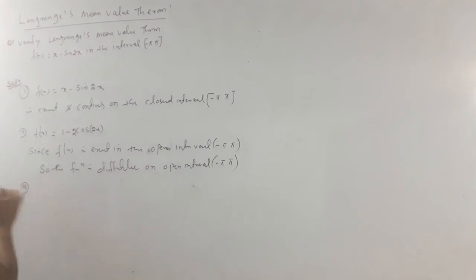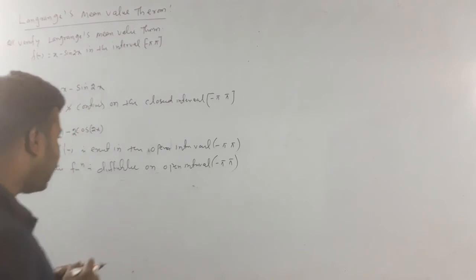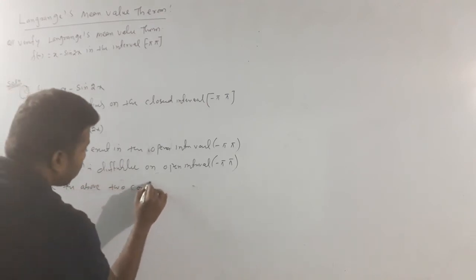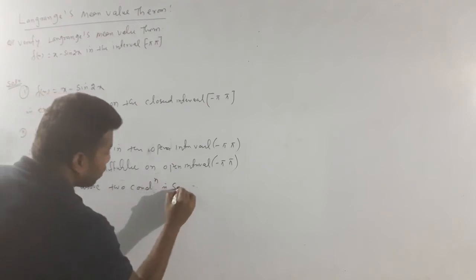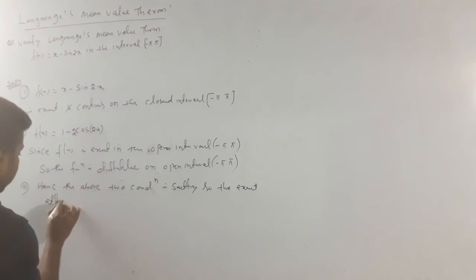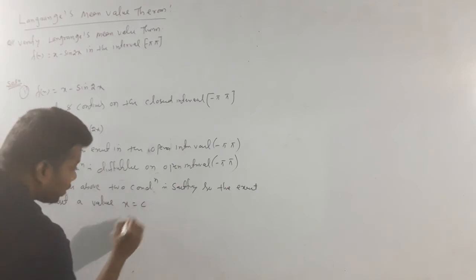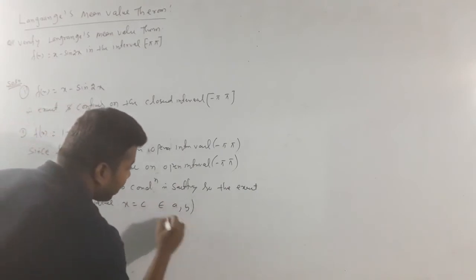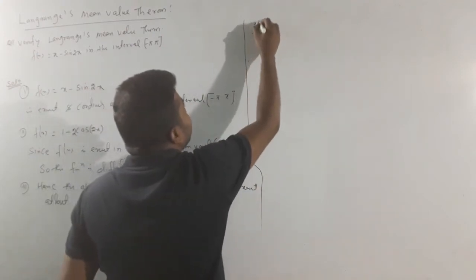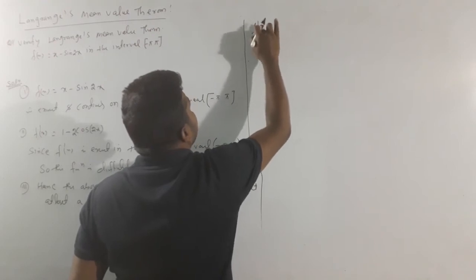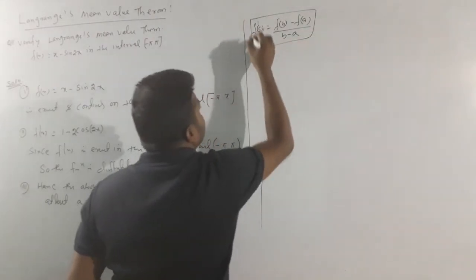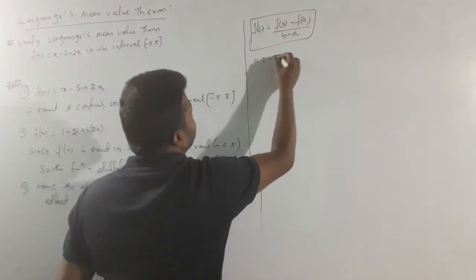Since both step 1 and step 2 conditions are satisfied, hence the above two conditions are satisfied. There exists at least a value x equal to c, which belongs to a, b. The condition is: f prime of c equals f of b minus f of a divided by b minus a. Here a equals minus pi and b equals pi.